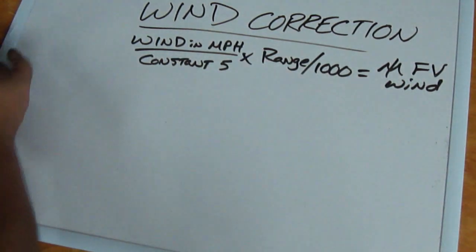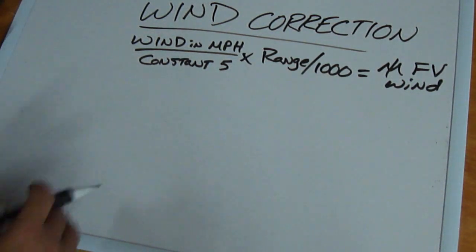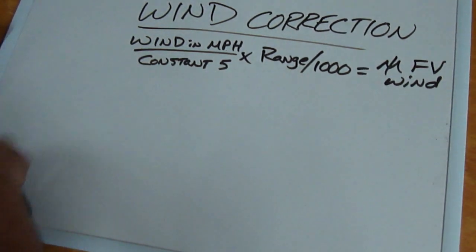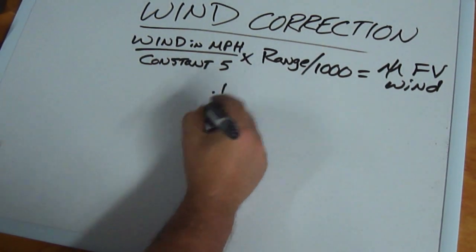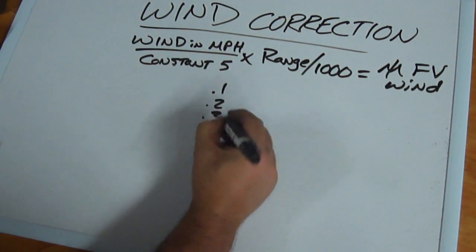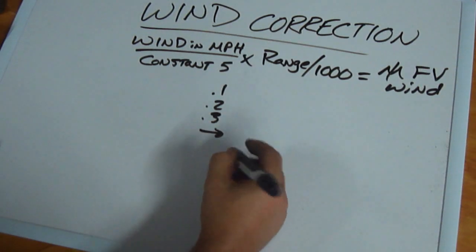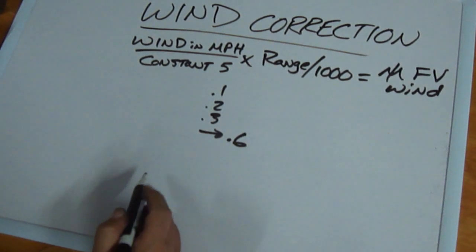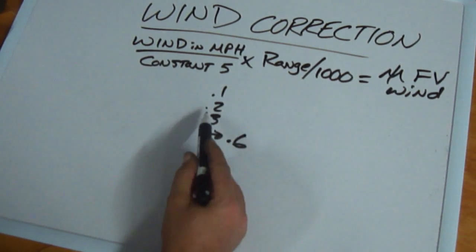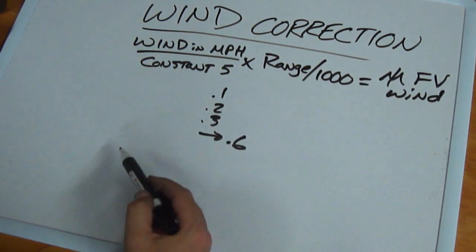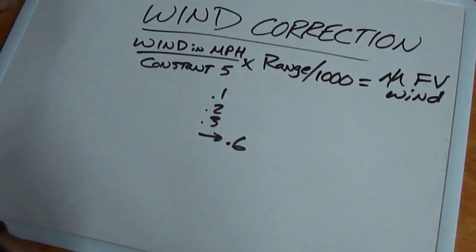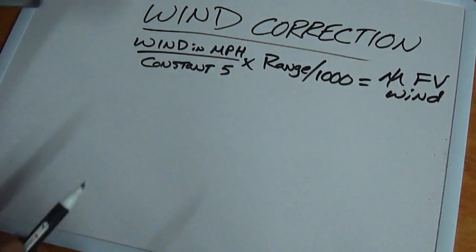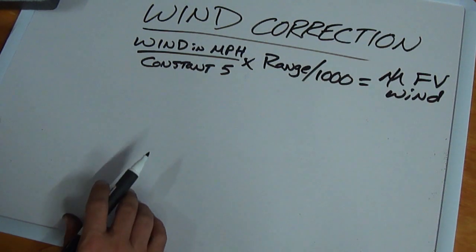This formula actually looks like a nightmare because you're dividing things by a thousand and everything else, but it's really very straightforward. Out to 700 yards, all you really have to remember is .1, .2, .3, all the way out to .6. If you're at 300 yards this is going to be .3, if you're at 200 yards it's going to be .2, 600 yards .6. Once you get to 700 yards, that's when we want to add that extra tenth in there. But it's really pretty straightforward.